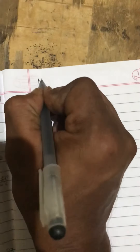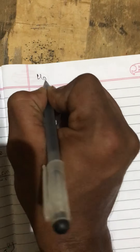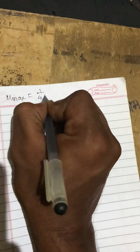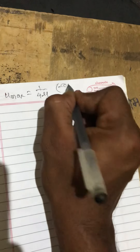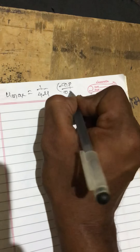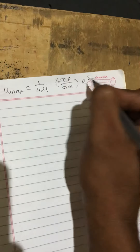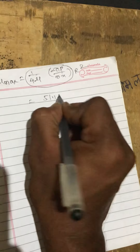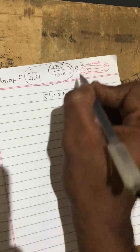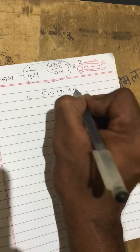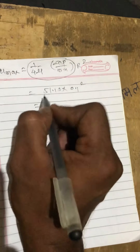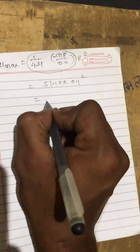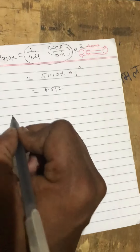The maximum velocity U_max = (1/4μ)(−∂p/∂x) × R². The parameter is 51.15 and R = 0.1 m, so U_max = 51.15 × 0.1² = 0.51 m/s.